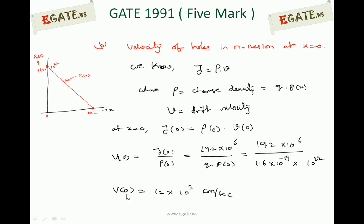So the velocity of holes in the N region at X equal to 0 is 12 into 10 to the power 3 centimeter per second. To summarize: the velocity of holes is 12 into 10 to the power 3 centimeter per second, and the current density calculated is 19.2 into 10 to the power 6 ampere per centimeter square.